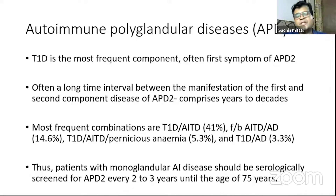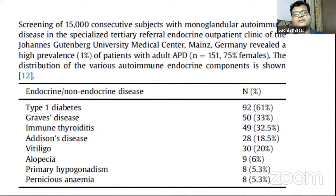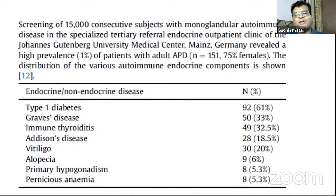The recommendation is that patients even with monoclandular autoimmune disease should be serologically screened for APS type 2 at every three-yearly interval until the age of 75. This recommendation came from a study of 15,000 consecutive patients in a tertiary endocrine outpatient clinic in Germany, looking at all patients with monoclandular autoimmune disorders and finding the prevalence of additional disorders at nearly 1%.